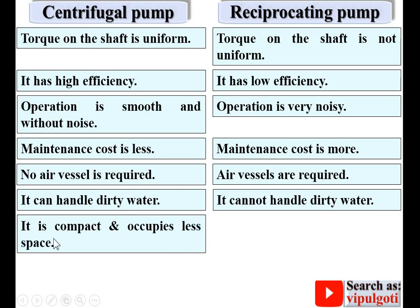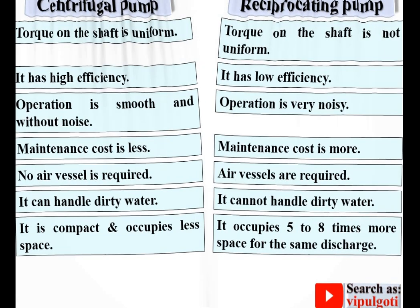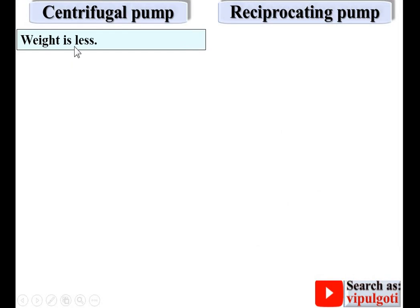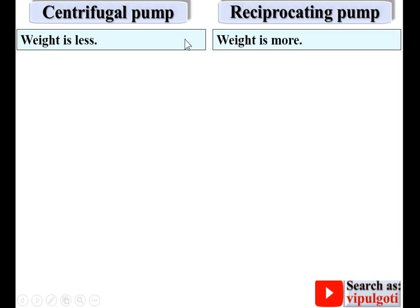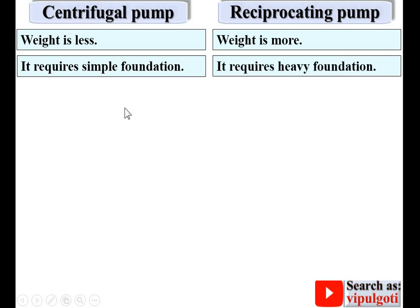Centrifugal pump is compact and occupies less space, whereas reciprocating pump occupies 5 to 8 times more space for the same discharge. Weight of centrifugal pump is less compared to reciprocating pump for the same power. Centrifugal pump requires a simple foundation, while reciprocating pump requires a heavy foundation due to its to-and-fro motion.